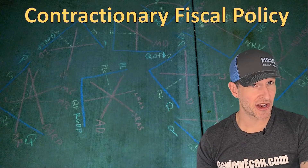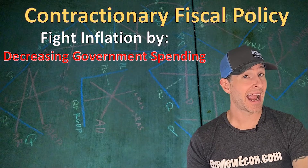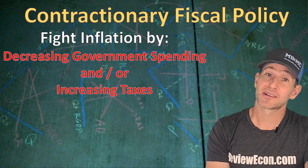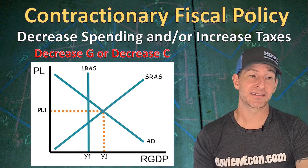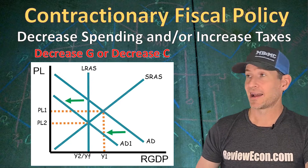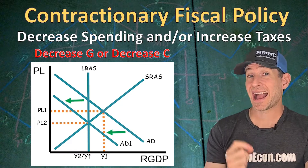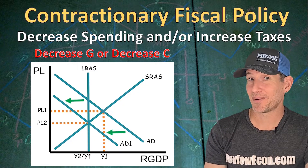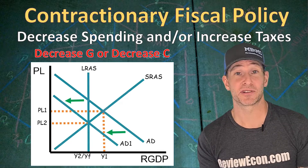If the economy is in an inflationary gap, contractionary fiscal policy can be used to fight inflation. That means the government is going to decrease spending and/or increase taxes. Increasing taxes reduces disposable income for consumers, which reduces consumer spending. The decrease in government spending and/or increase in taxes will decrease G or C, shifting the aggregate demand curve to the left and restoring full employment output at a lower price level, reducing inflation. However, contractionary fiscal policy reduces output, meaning higher unemployment — which is why it is not popular among politicians. That's why when it comes to fighting inflation, it's usually the Federal Reserve that puts the brakes on the economy.